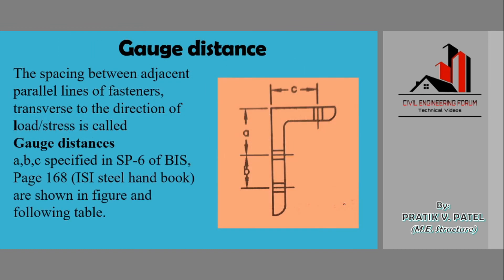The last topic for today is gauge distance. Looking at an L-section or channel member, we can see the cross-sectional area with multiple bolt holes. The gauge distance is the spacing between adjacent parallel lines of fasteners, measured transverse to the direction of load/stress.